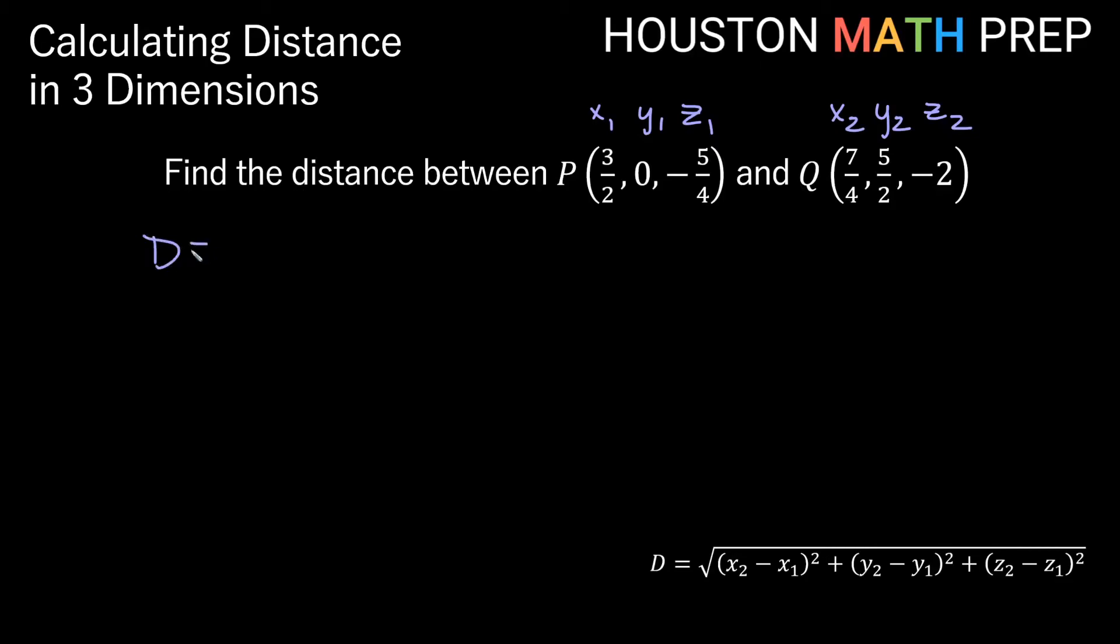So if we go ahead and find the distance and enter into our formula here, x2 minus x1, that's going to be 7/4 minus 3/2. We'll do some work on that in a bit, make that a little more friendly, plus y2 minus y1 quantity squared. So that'll be y2, which is 5/2, minus 0 squared,